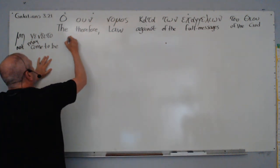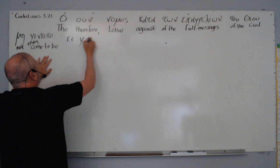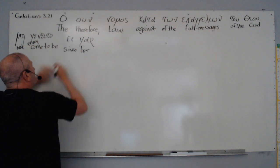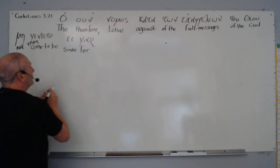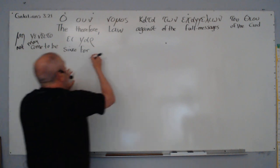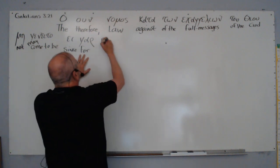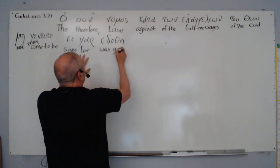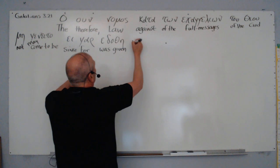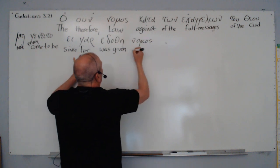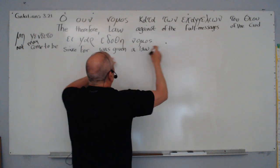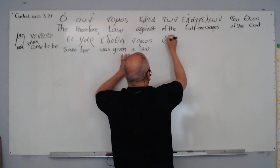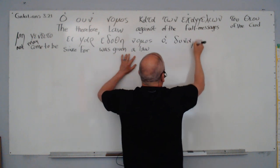Now he says, for, for since, it's a determined condition, determined unfulfilled, second class. So since, for since, it was given, nomos, a law was given, was given.